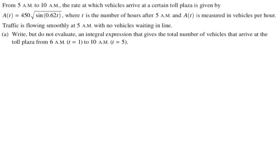For part A, we want to write, but do not evaluate, an integral expression that gives the total number of vehicles that arrive at the toll plaza between t equals 1 and t equals 5. So we are trying to figure out the total number of vehicles that arrive. That would be an integral of the rate at which they're arriving, and it turns out in the problem, the rate at which the vehicles arrive is A(t). So for this problem, all we really want to do is the integral from 1 to 5 of A(t) dt.